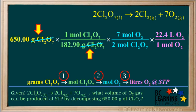We cancel out the grams of Cl2O7, the moles of Cl2O7, and the moles of O2. The unit we're left with is liters of O2, which is what we want to find in this problem.